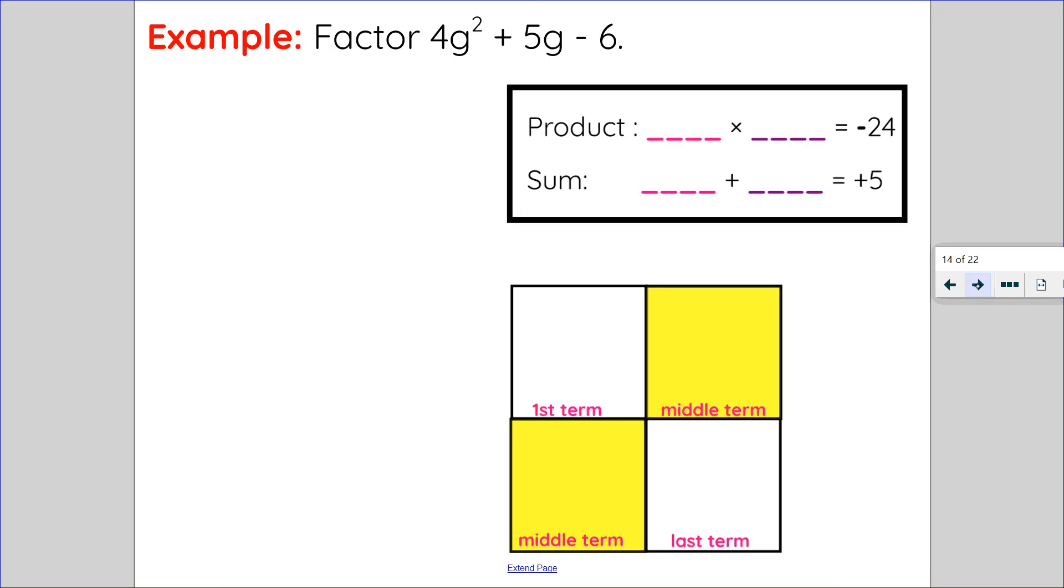So let's go ahead and try this example. I want to factor 4g squared plus 5g minus 6. So first thing I look for is GCF. Since 5 is a prime number, I know there's no GCF.